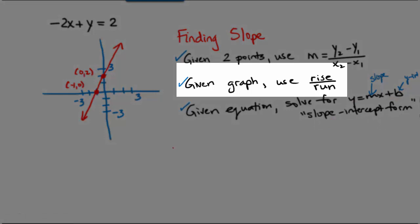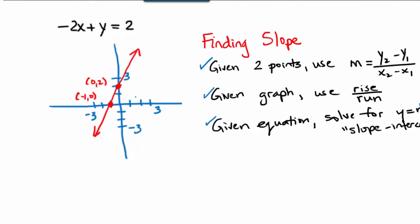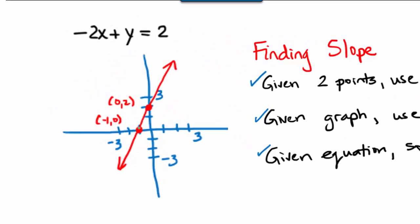First, I'm going to look at the graph and use the rise over run technique. To use the rise over run technique, you need to pick a point on the graph, for example, (-1, 0), and then imagine getting from that point to another point on the graph by moving horizontally and then vertically.